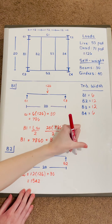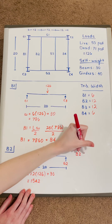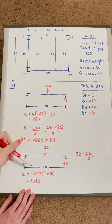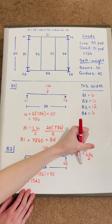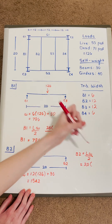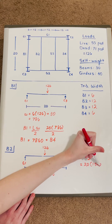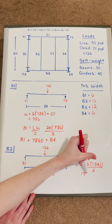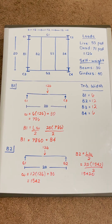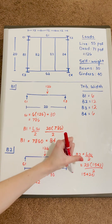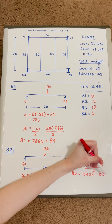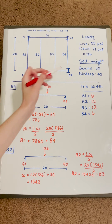Plugging into the formula, the reaction force for beam 2 equals L times omega divided by 2. The length is 20 feet, so 20 times 1,542 divided by 2 comes out to 15,420 total. The reaction force for beam 2 is going to be the exact same as for beam 3, because it's exactly symmetrical on both sides — just as beam 1 was equal to beam 4. Now I have the reaction forces for all my beams.